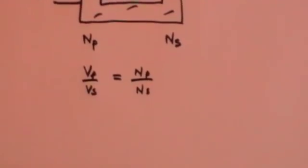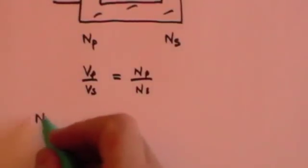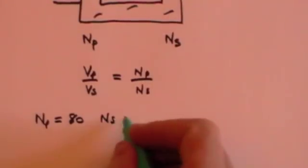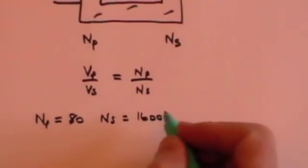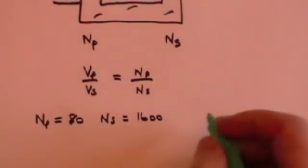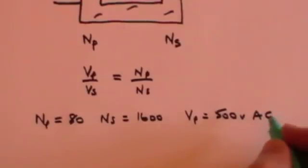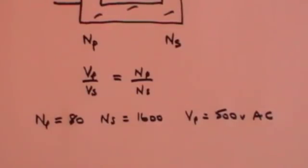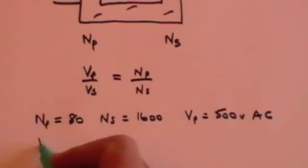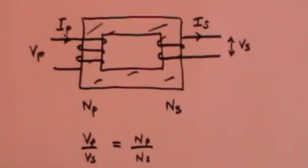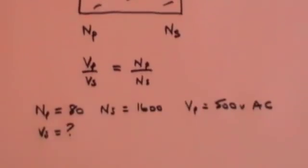Here's an exam question. Suppose the number of turns in the primary is 80, the number of turns in the secondary is 1600 — quite a lot more — and the voltage of the primary is 500 volts, and remember it has to be AC, otherwise it's not going to work. The question is: what is the voltage in the secondary? In other words, what is the output voltage that this transformer is going to deliver?